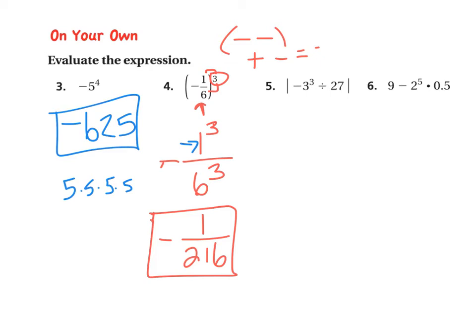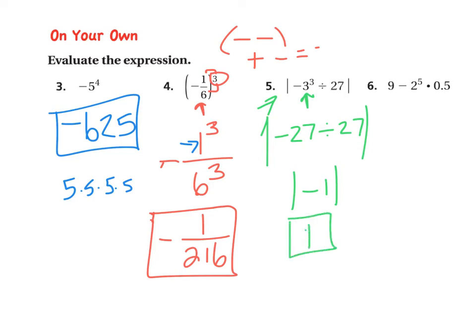Alright, let's do number 5. You see these straight bars — those mean absolute value. Absolute value changes anything inside of it to a positive number, so once we get it all done, if it is negative, it will change it to positive. First we start with exponents: 3 to the power of 3 would be 3 times 3 is 9, and 9 times 3 is 27. That was not in parentheses, so this would just be negative 27 divided by negative 27. Negative 27 divided by negative 27 is negative 1. The absolute value of a negative number just makes it positive. So your final answer is 1.